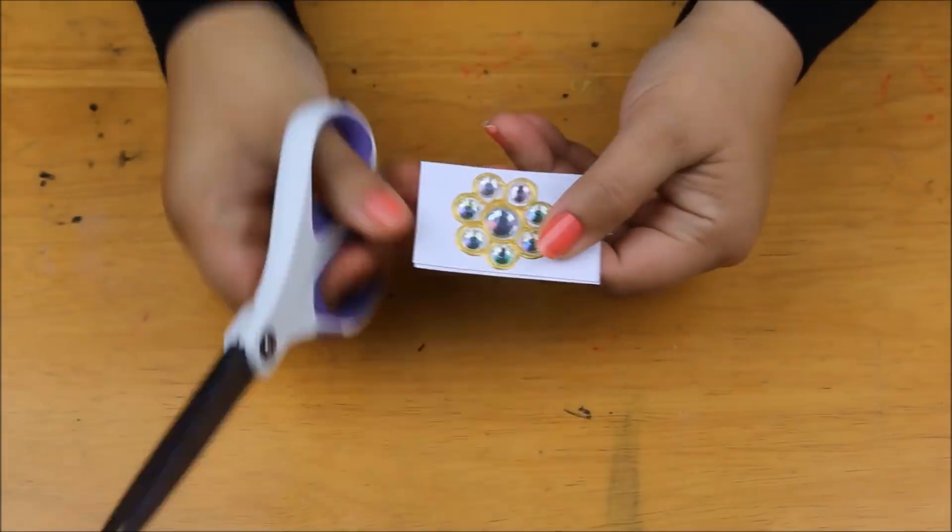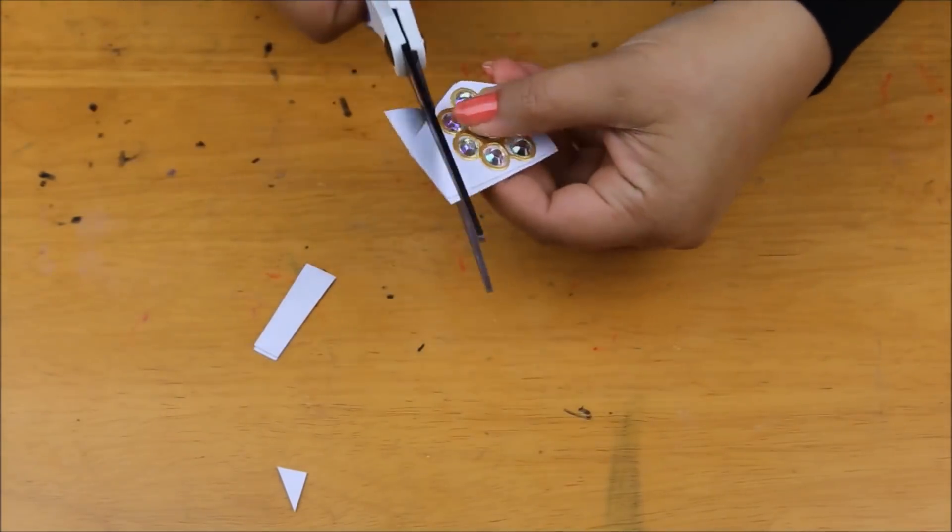Next, I'm going to cut the flower once the paint is dry. It takes about 30 minutes for the paint to dry.